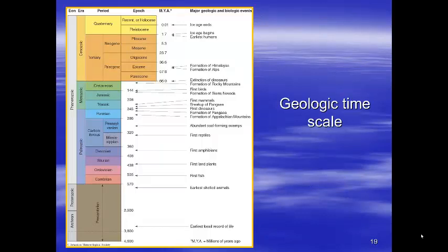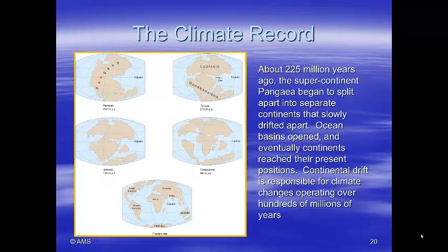Here we see the geological time scale, going by millions of years ago — starting with about 0.01 million years ago when the ice age ends, down to the earliest fossil records at about 3,800 million years ago. About 225 million years ago, the supercontinent split up and separated into continents that slowly drifted apart, ocean basins opened, and eventually continents reached their present position. This continental drift is responsible for climate changes operating over hundreds of millions of years.